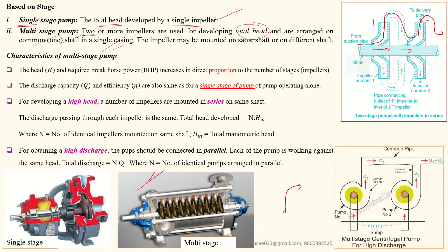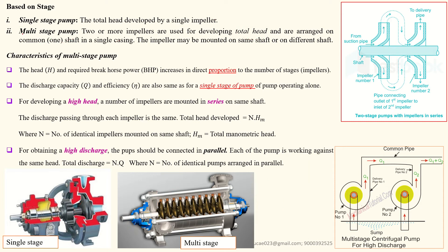For example, if a pump has 10 impellers and each impeller develops a head of 10 meters, the total head is 10 × 10 = 100 meters. If each impeller practically delivers 6 meters, the total head is 10 × 6 = 60 meters. Such calculation questions may be asked in exams. This is the multi-stage pump concept.